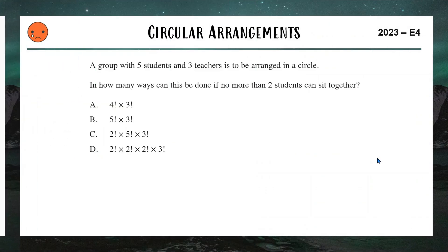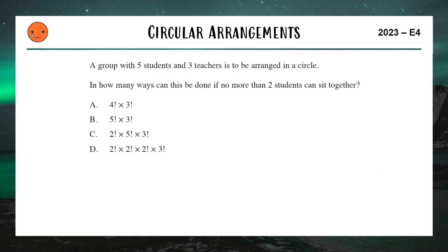Moving on to our next one, we have a circular arrangement question from the 2023 HSC. This was a very tough question that a lot of people really struggled with putting into the top possible band of E4. We have five students and three teachers to be arranged in a circle. In how many ways can this be done if no more than two students sit together? Let's set up our circular table. What we're going to do first is we're going to sit our teachers. I'm going to put one here, one here, and one here.